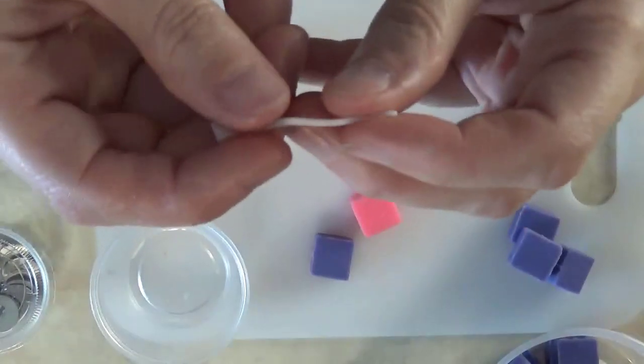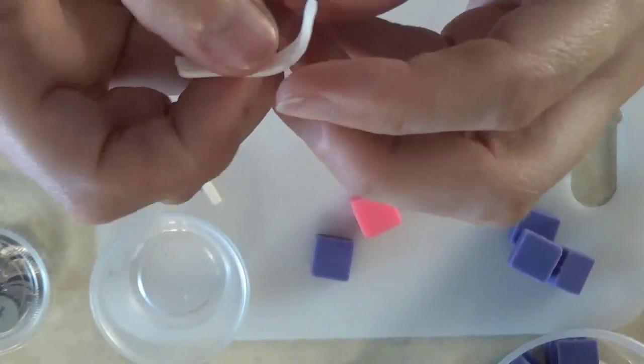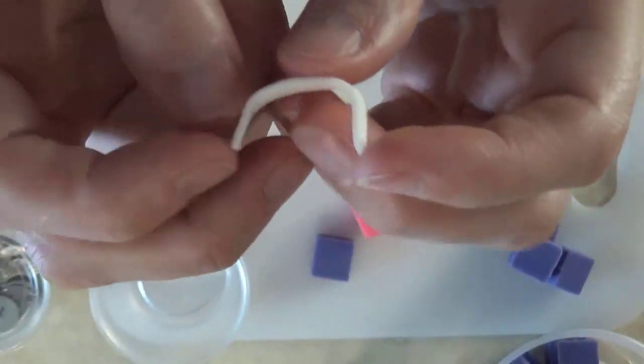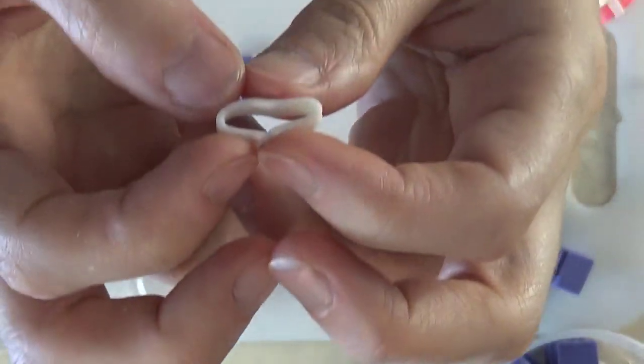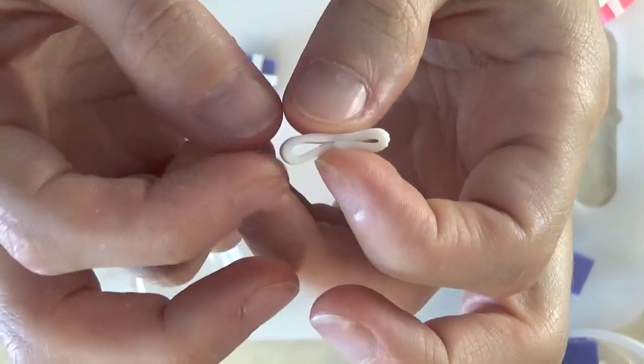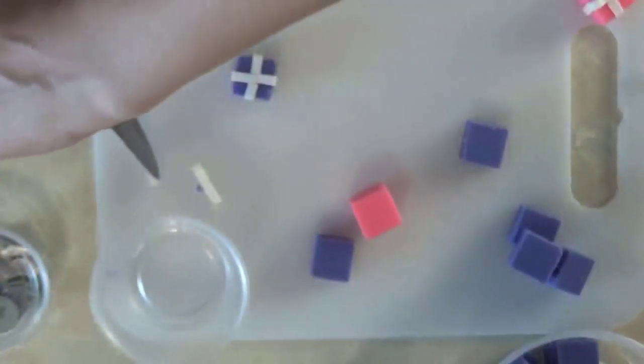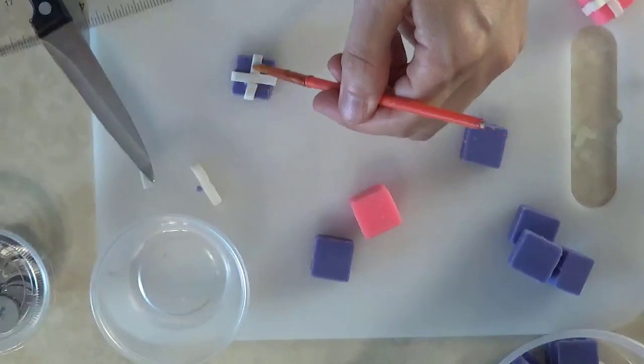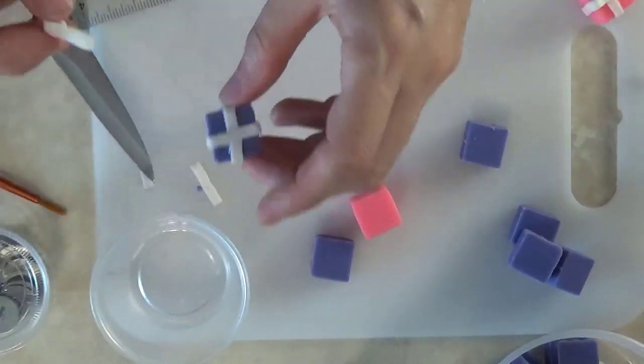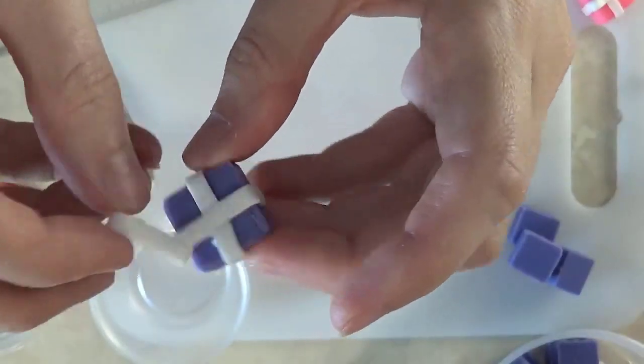So again, kind of fold these over so they meet equally and then go down. Take my paintbrush, put some water on. You'll notice that I put the bow this way so it covers the seams, so it looks cleaner.